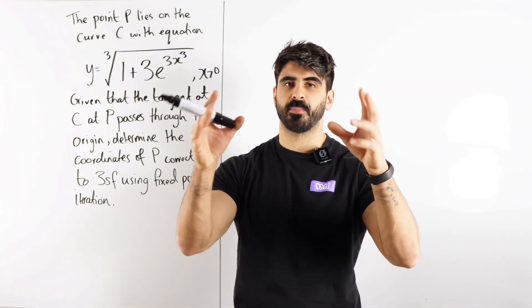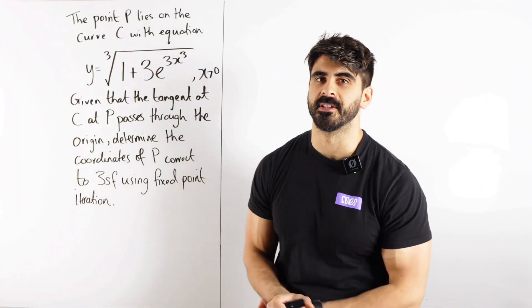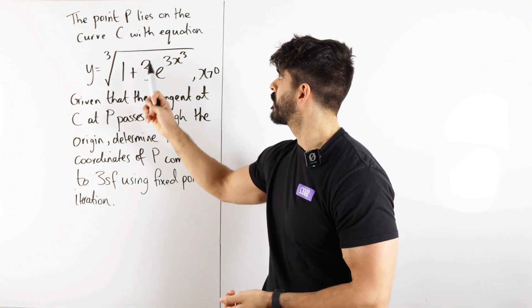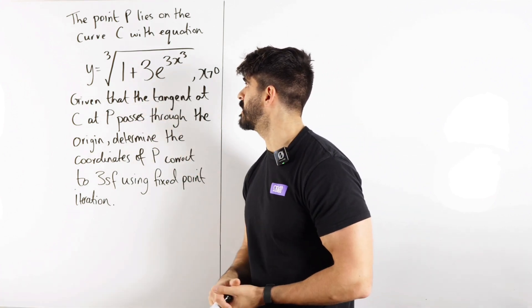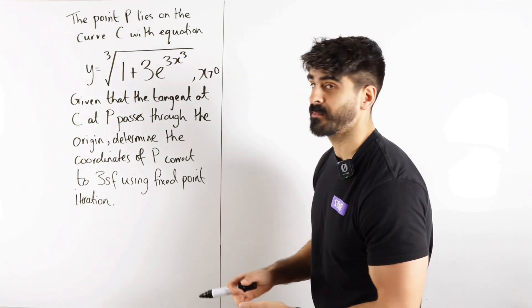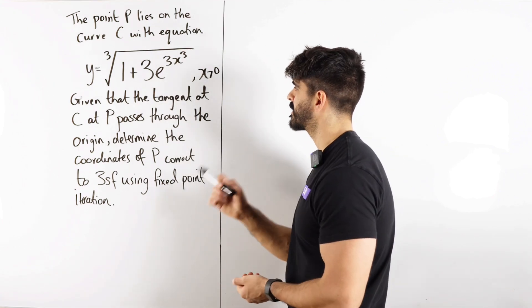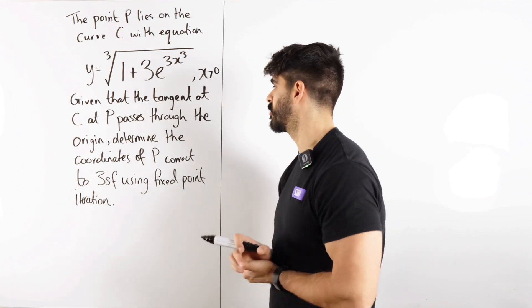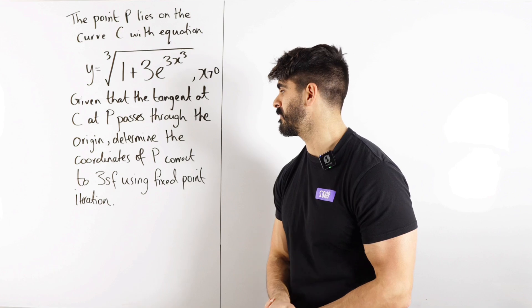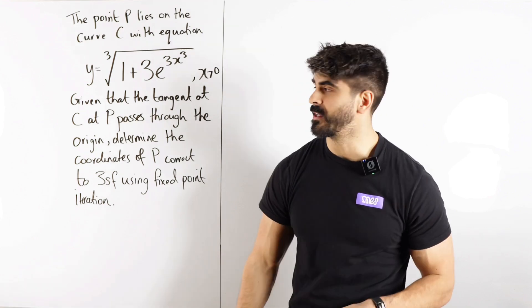Let's see how good your fixed point iteration really is. We have the point P lies on the curve with equation cube root of 1 plus 3e to 3x cubed, x being positive. Given that the tangent at P passes through the origin, determine the coordinates of P correct to 3 significant figures using fixed point iteration.